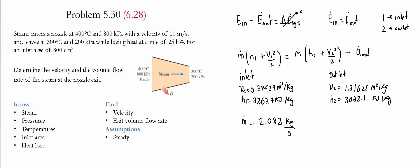Now that we have the mass flow rate, the enthalpy at inlet and exit, the inlet velocity, and the rate of heat leaving the nozzle, we can find the exit velocity. Applying the energy balance and doing a little algebra, we find that the exit velocity is equal to 606 meters per second.